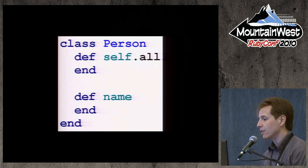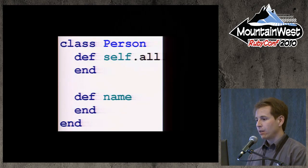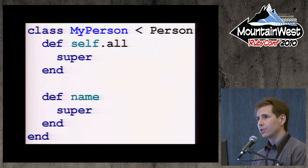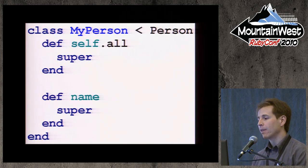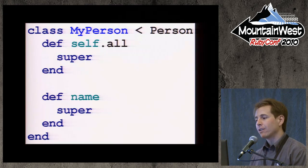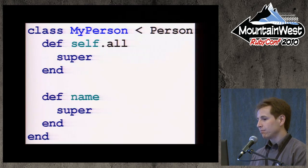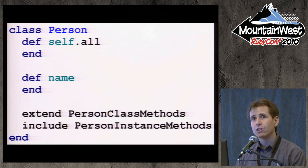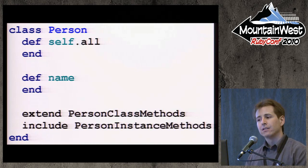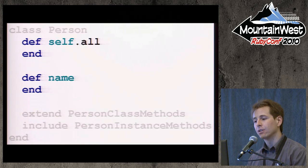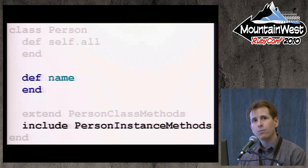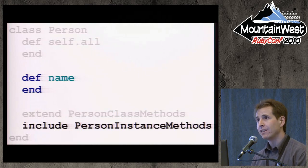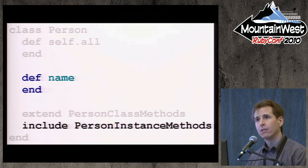Yehuda touched on this near the end of his presentation yesterday, so I'll go into a bit more detail. You can have users subclass your class in order to override your methods, but that will not affect all instances of the class, and the user may want to affect instances that they are not themselves creating. The goal here is to allow users to override the methods you have defined, still call super to get the default behavior, and have the overriding affect all instances of the class. The problem is that class methods defined this way cannot be overridden by modules, and instance methods defined this way can only be overridden by modules on a per-instance basis — you cannot override instance methods for all instances at once, due to how method lookup works in Ruby.